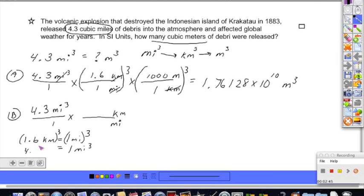And if you do 1.6 times 1.6 times 1.6, you would get 4.096 kilometers cubed. And now that you know their cubic relationships, you can go and plug them in. 4.096 kilometers cubed is equal to 1 mile cubed. New fraction line. Kilometers cubed is on the numerator, so we're going to put it in the denominator here.